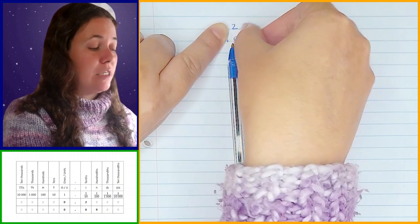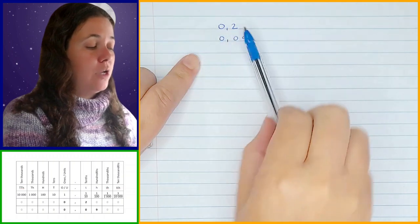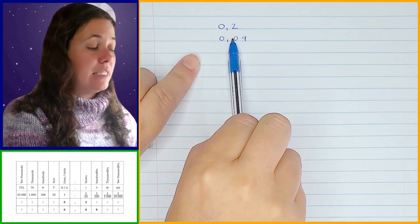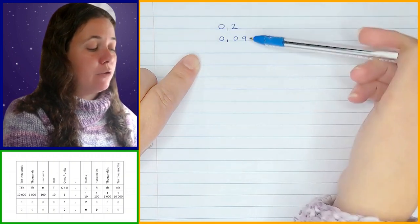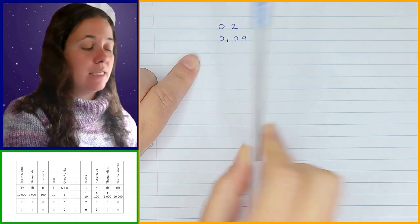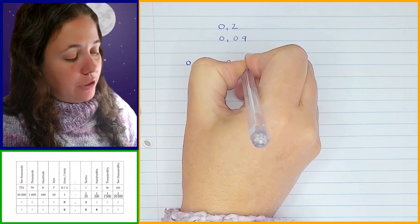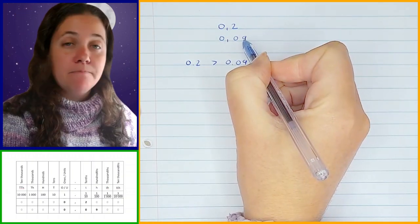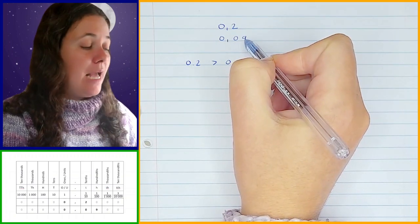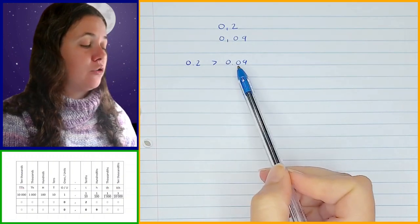So 2 is greater than 0, and this one didn't have anything further left than that 2. So at this point all I can say is that 2 is greater than 0. Now because I know that is greater than that, this whole number must be greater than that whole number — it doesn't matter what comes after it. So I can say 0.2 is greater than 0.09. It doesn't matter that the 9 is there because the 9 is in the hundredths position, and hundredths are worth less than tenths.